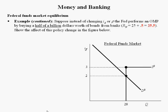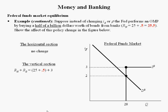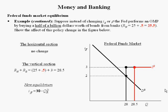In the example below, I'm going to demonstrate how an open market purchase works. Suppose the Fed buys $0.5 billion worth of bonds from banks. There is no change in the horizontal section of the supply curve. The vertical section increases by 0.5 billion because non-borrowed reserves increases by 0.5 billion when the Fed buys bonds from banks in the amount of $0.5 billion. So the vertical section goes from 28 billion to 28.5 billion. The new equilibrium is found by plugging the 28.5 billion into quantity demanded for reserves, and the new Federal Funds rate is 1.5.